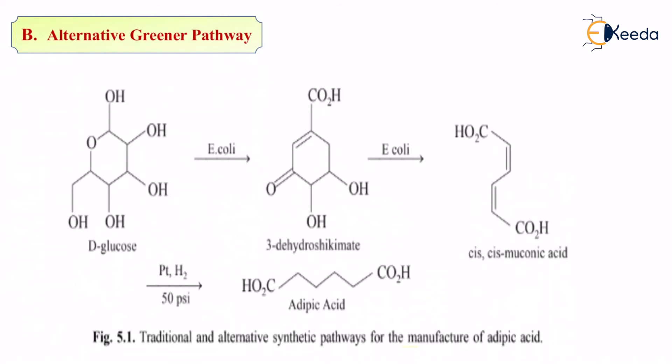The only difference between the conventional way and the greener way is, we have changed the feedstock. We have changed the raw material. In the conventional way, we are using benzene. Benzene itself is carcinogenic in nature. It is a cancer-causing reagent. In the alternative, greener way, we are using glucose, which is very environmentally friendly and can easily break off.